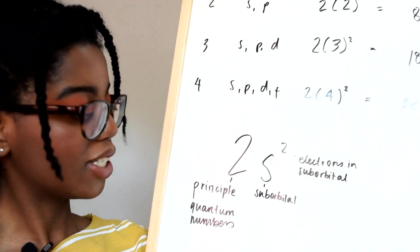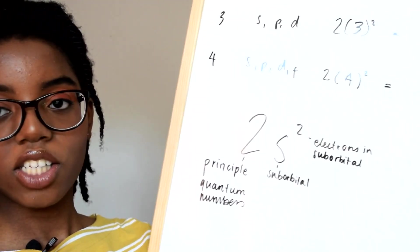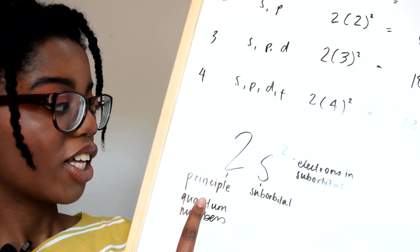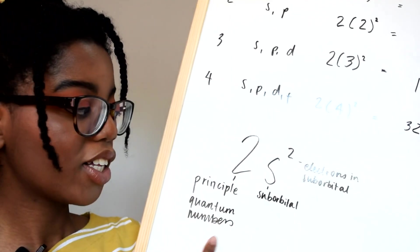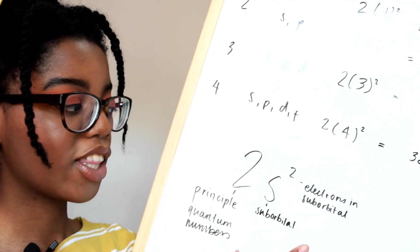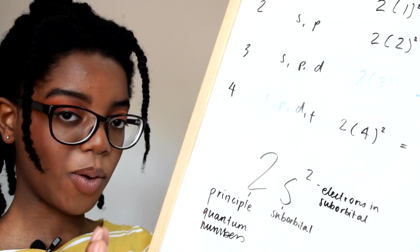We write this as chemists with this notation where you have the principal quantum number, the subshell, and then the electrons in the subshell as a power.